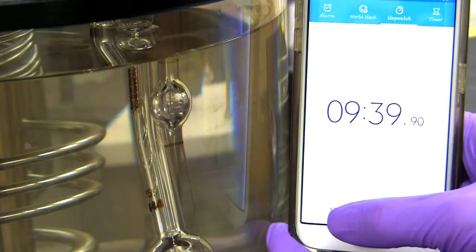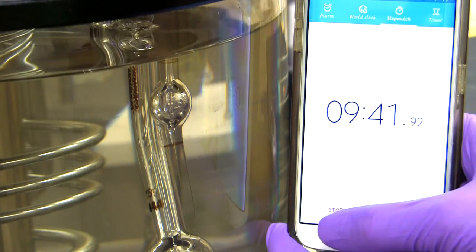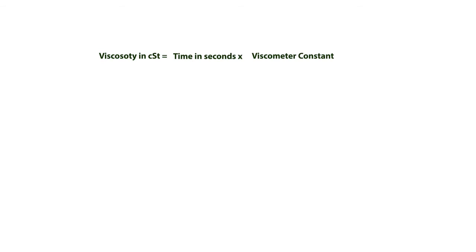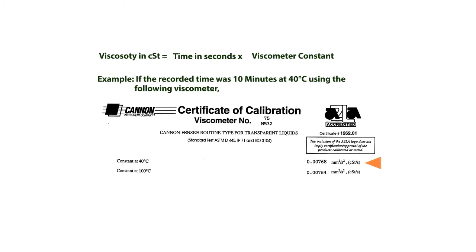Calculate the kinematic viscosity in millimeters squared per second or in centiStokes of the sample by multiplying the efflux time in seconds by the viscometer constant. Repeat the test and calculate the kinematic viscosity again. Average the values to report the kinematic viscosity of the tested fuel.